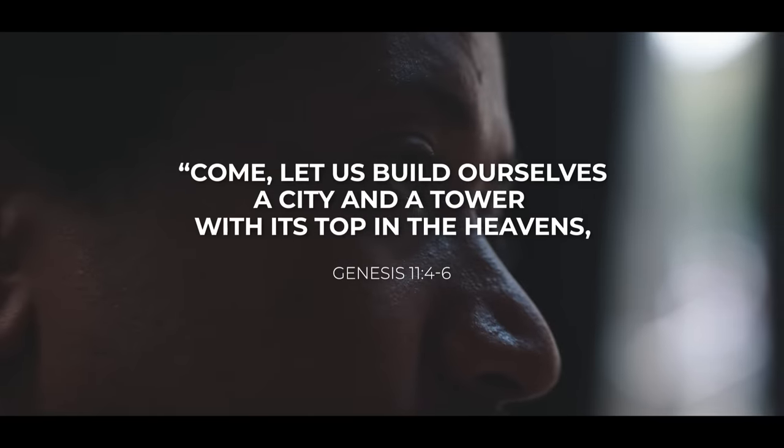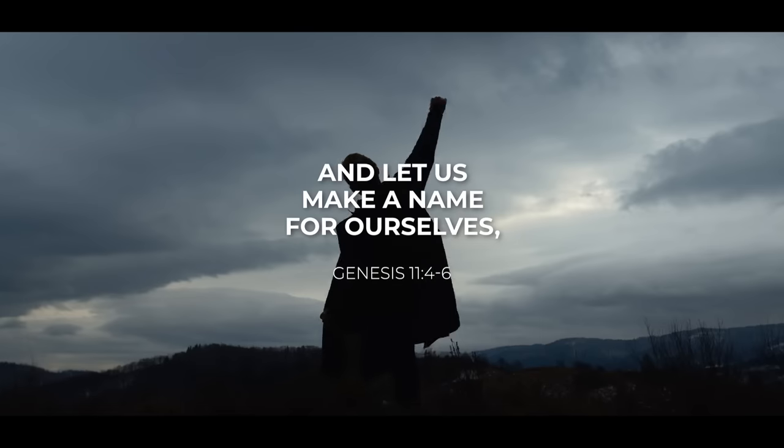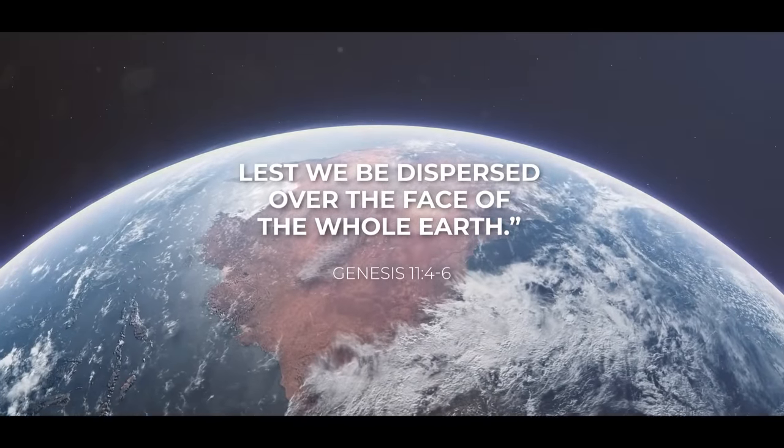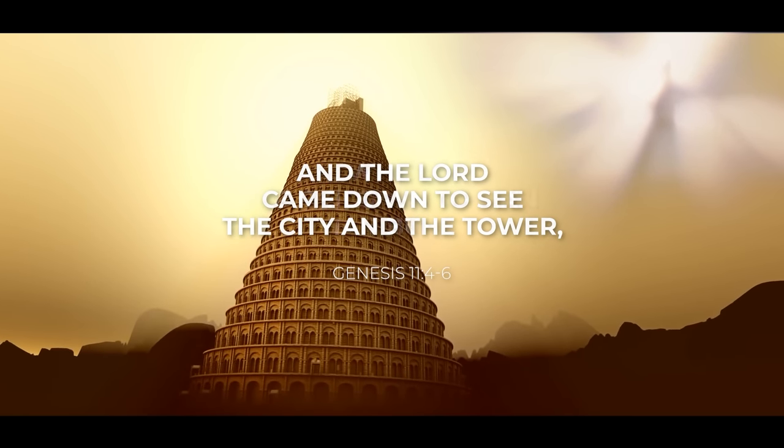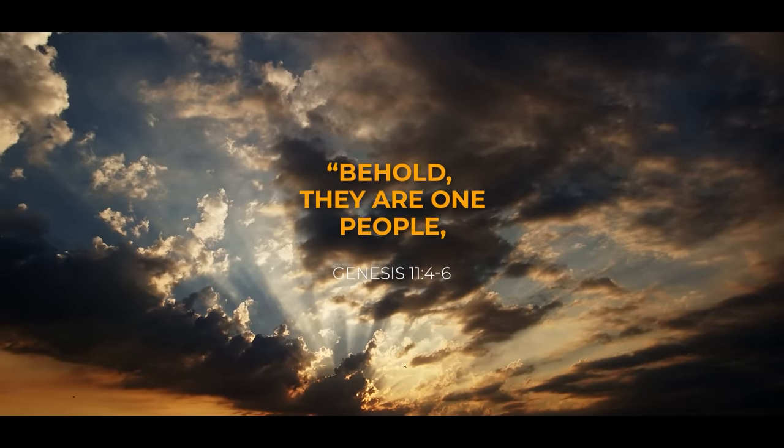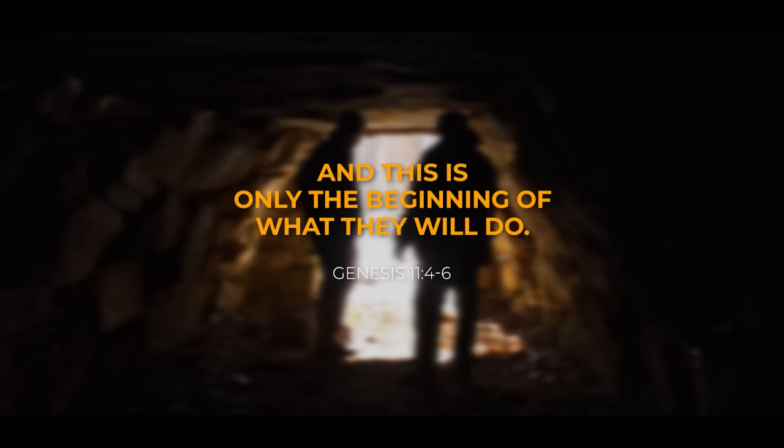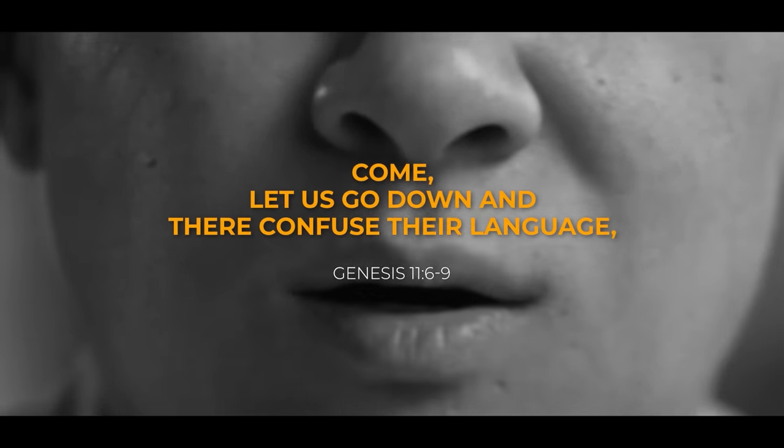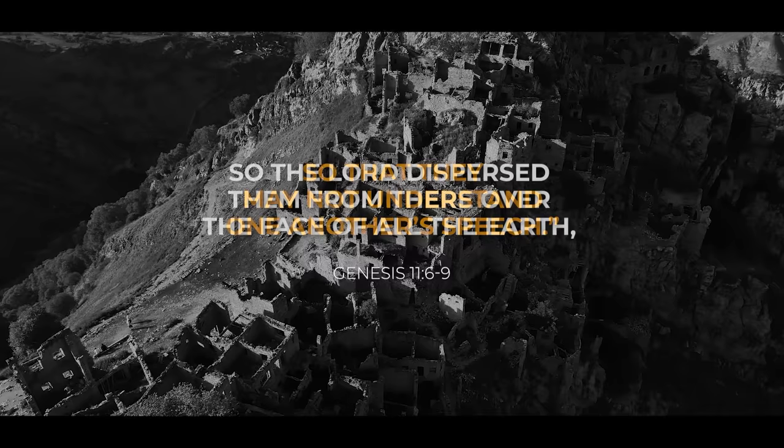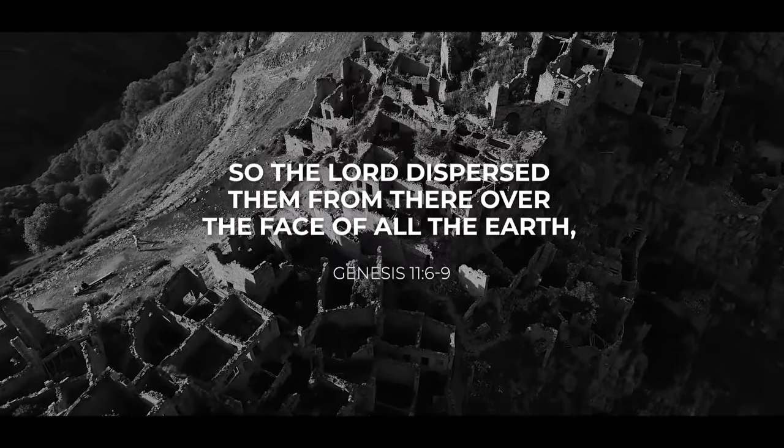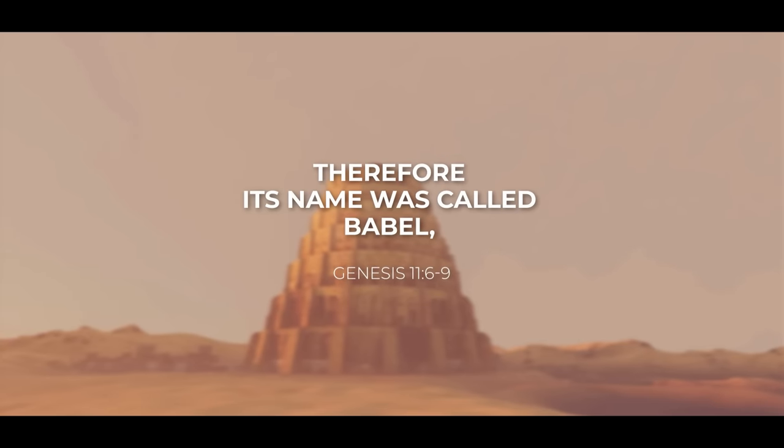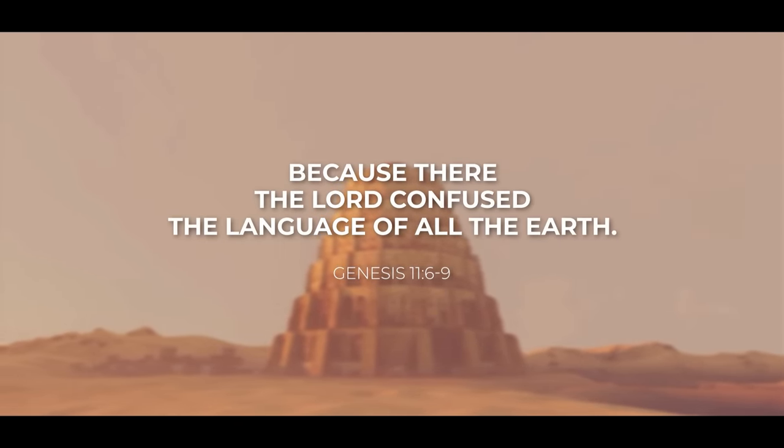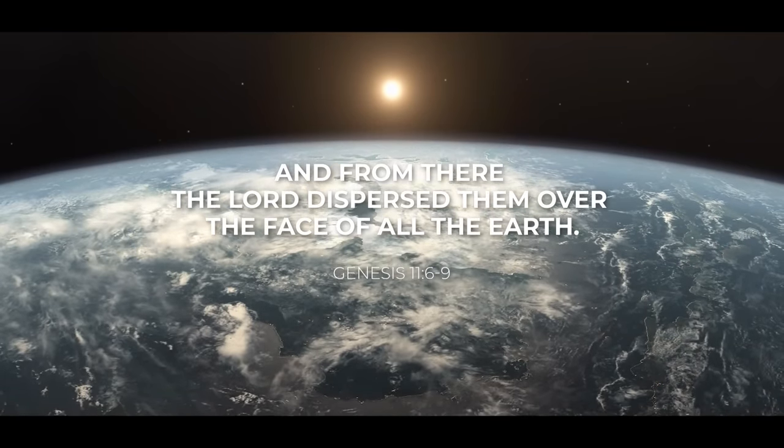Then they said, 'Come, let us build ourselves a city and a tower with its top in the heavens, and let us make a name for ourselves, lest we be dispersed over the face of the whole earth.' And the LORD came down to see the city and the tower, which the children of man had built. And the LORD said, 'Behold, they are one people, and they have all one language, and this is only the beginning of what they will do.' So, imagine if He just left them, how evil the world would have been. 'And nothing that they proposed to do will now be impossible for them. Come, let us go down, and there confuse their language, so that they may not understand one another's speech.' So the LORD dispersed them from there over the face of all the earth, and they left off building the city. Therefore, its name was called Babel, because there the LORD confused the language of all the earth, and from there the LORD dispersed them over the face of all the earth.